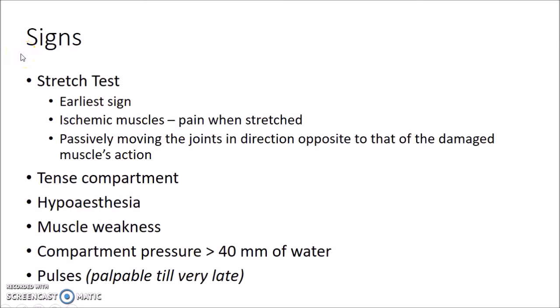Now let us see about the signs of Compartment Syndrome. The stretch test is the earliest sign. The principle is that ischemic muscles produce pain when stretched. This can be elicited by passively moving the joints in a direction opposite to that of the damaged muscle's action. For example, passive extension of fingers produces pain in the flexor compartment of the forearm in case of Compartment Syndrome of the forearm.